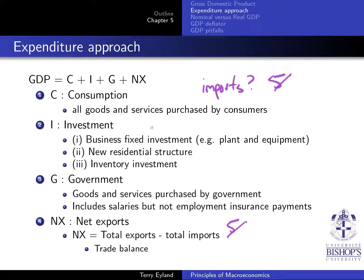Government spending includes goods and services purchased by the government — including salaries — but not employment insurance benefits or transfer payments. Transfer payments like EI are just a transfer of money, similar to parents giving you $1,000. But when the government pays a judge's salary, they're getting a service — something is being produced. Net exports are total exports minus total imports, which will lead to our trade balance discussion later on.